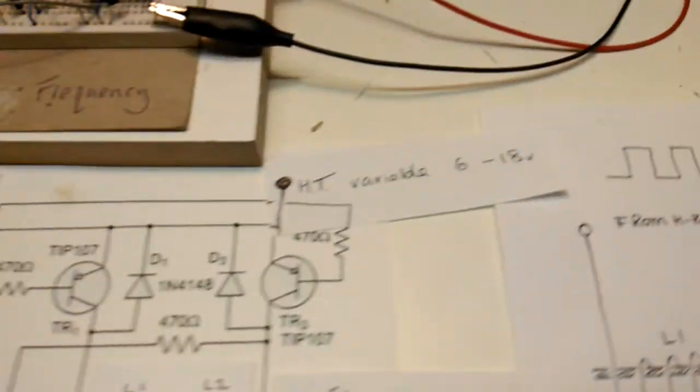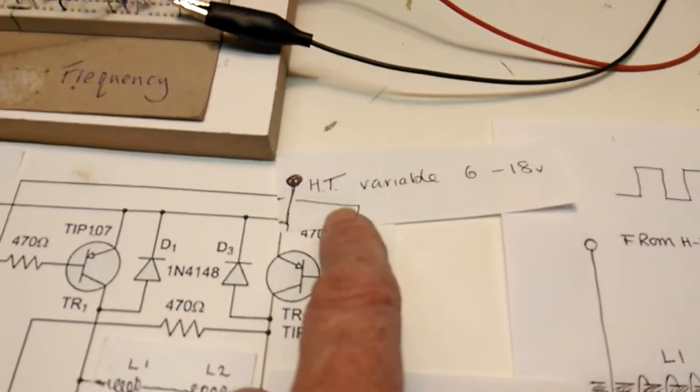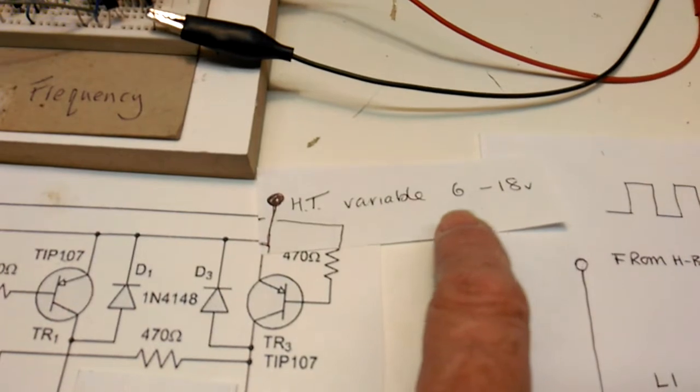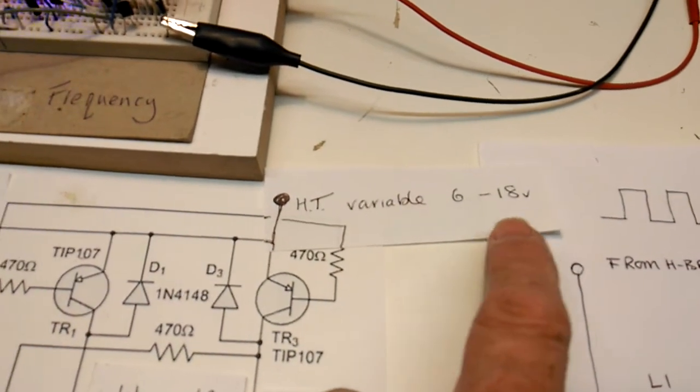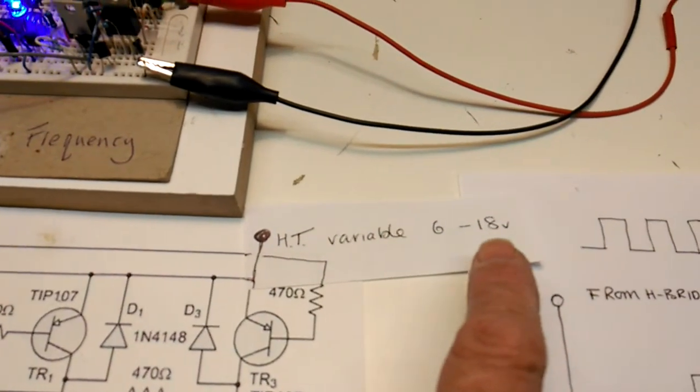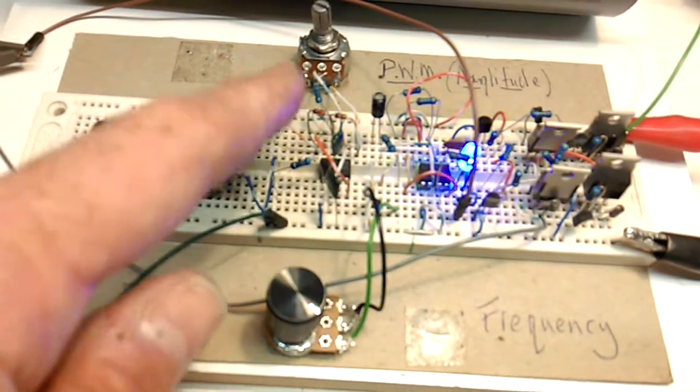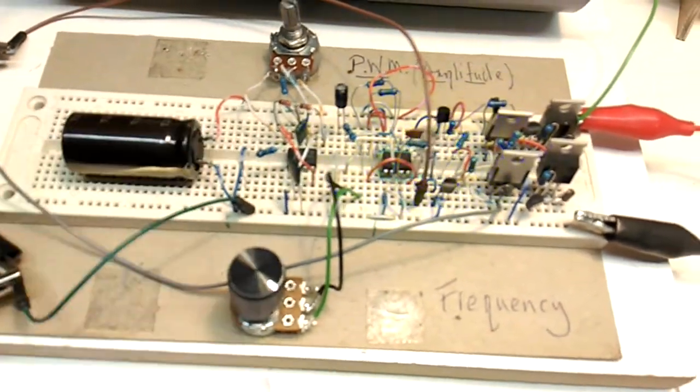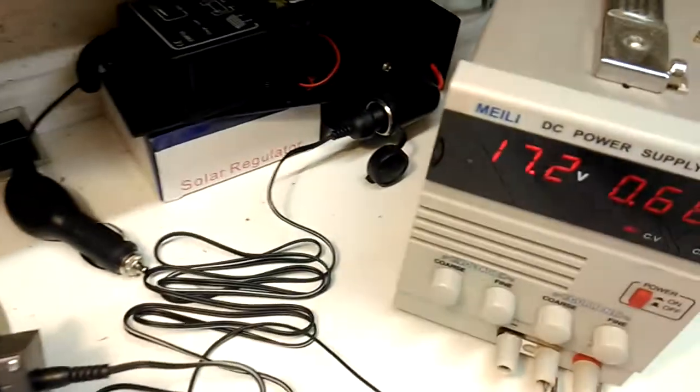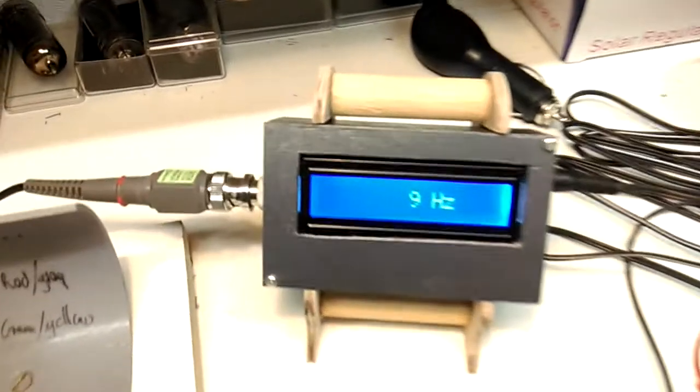At the present I've got a variable HT on it between 6 and 18V which just gives me my amplitude. I did originally have a PWM but that's redundant so I don't use that. I've just used my variable power supply and you can see there it's running at about 9hz.